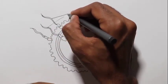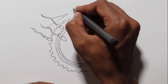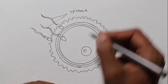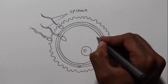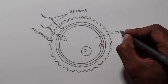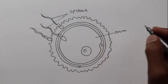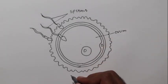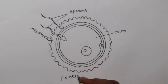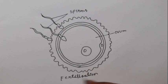Let's label the parts. These are the sperms. This is the ovum. Down here we have to name the diagram — this is fertilization in animals.